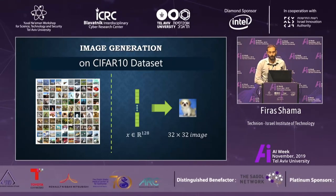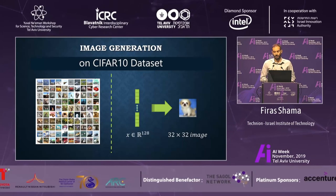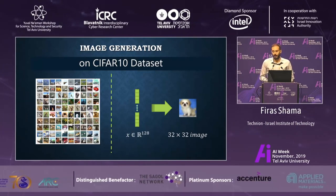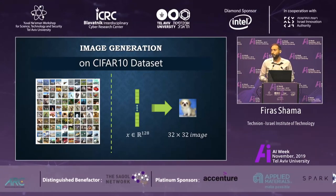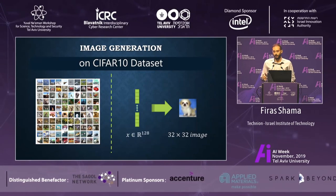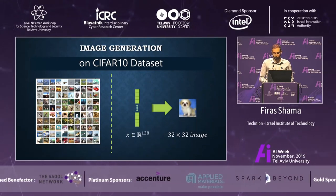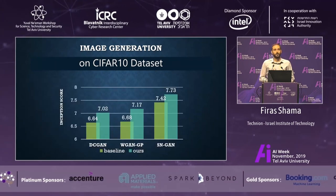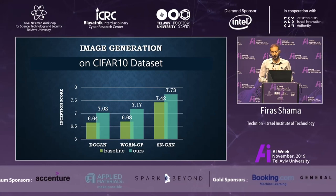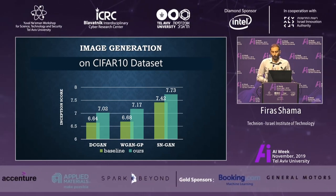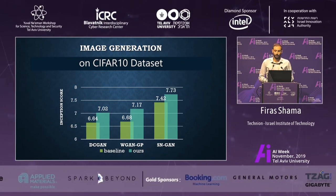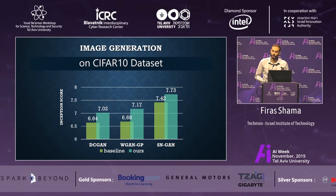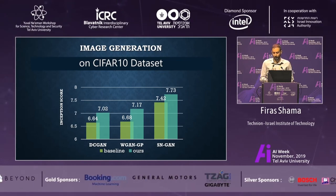A very popular challenge addressed for every new GAN is unconditional image generation on the CIFAR-10 dataset, which includes 10 types of objects with many 32x32 images each. To show our method is applicable to a variety of approaches, we chose three different methods — DCGAN, WGAN-GP, and SNGAN — and for each one added a feedback loop in one layer. For each one, we achieved a better inception score, where higher is better.